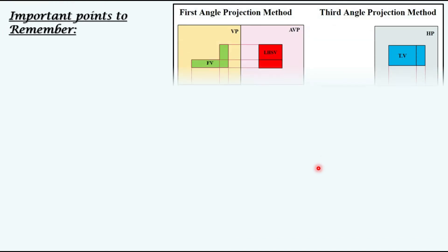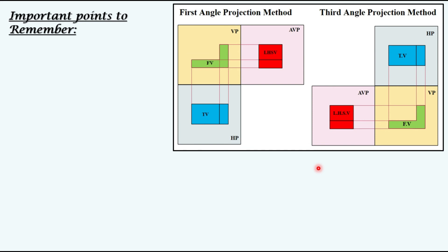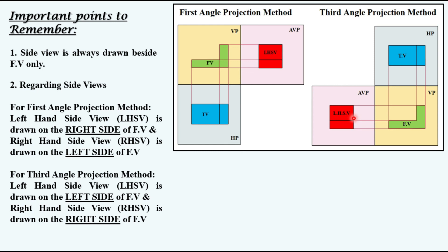Now let us compare both methods side by side. First, the side view is always drawn beside the front view only — this applies to both first angle and third angle projection methods. For the first angle projection method, the left-hand side view is drawn on the right of the front view, and similarly the right-hand side view will be drawn on the left. For the third angle projection method, the left-hand side view is drawn on the left of the front view, and similarly the right-hand side view will be drawn on the right side of the front view.